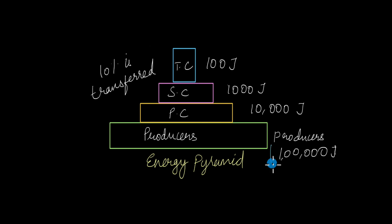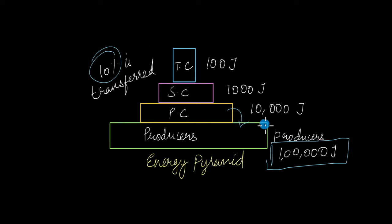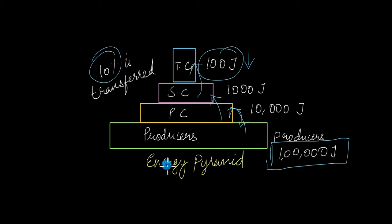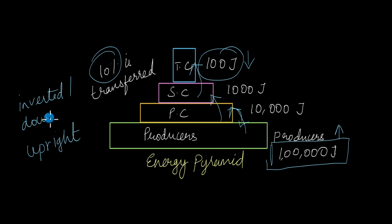Starting with 100,000 joules of energy present with producers at a given time, when primary consumers eat the producers, a lot of energy is lost as heat and only around 10 percent is transferred from producers to primary consumers. Again, only 10 percent is transferred to secondary consumers, and only 10 percent to tertiary consumers. So tertiary consumers have the least amount of energy at a given time, while producers have the most, making this an upright pyramid. It's interesting to note that biomass and number pyramids can be inverted or downward, but the energy pyramid can only ever be upright — it can never be downward because energy always decreases as we go up the trophic levels.